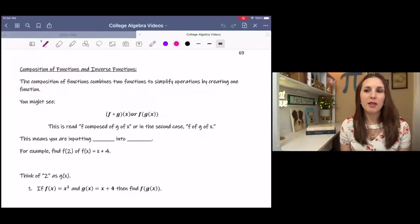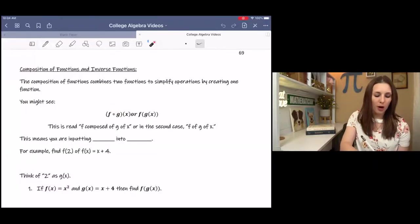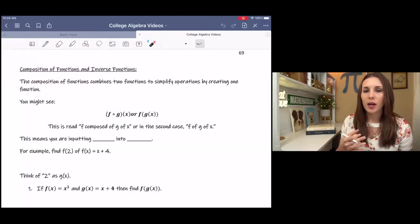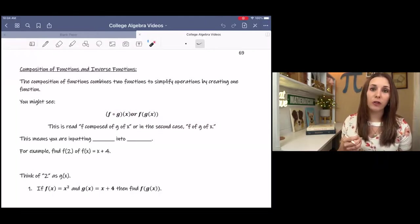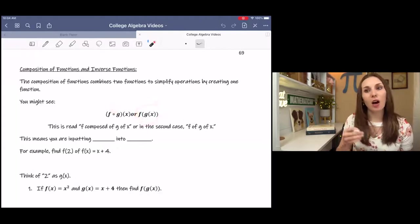You might see the notation for composition of functions written differently, depending. You might see this symbol with the open circle that means composition, or you might see it like this where it's kind of reminiscent of evaluating functions. But in either case, we say f of g of x. So whenever you see this symbol or written like this, you say f of g of x.